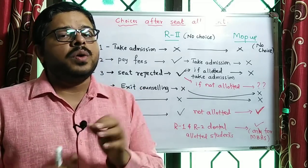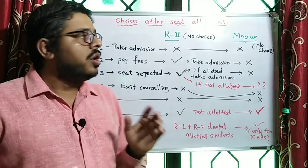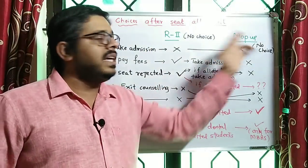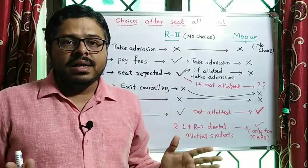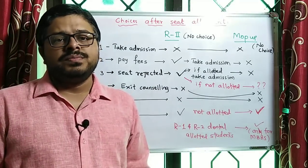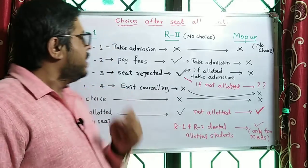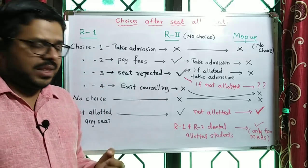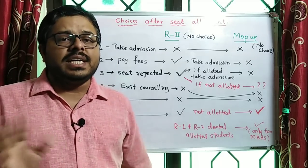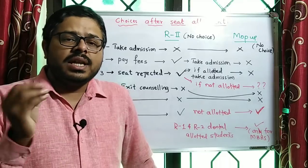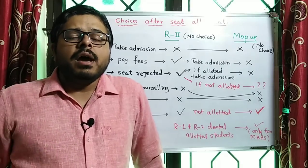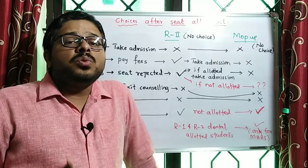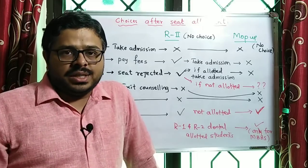So, round one, choice one, further round eligibility: you are satisfied with the seat. You are satisfied with the seat, but you are trying to get some other, better college.